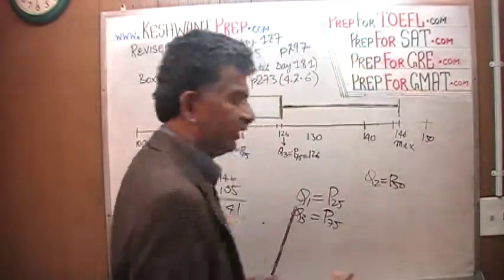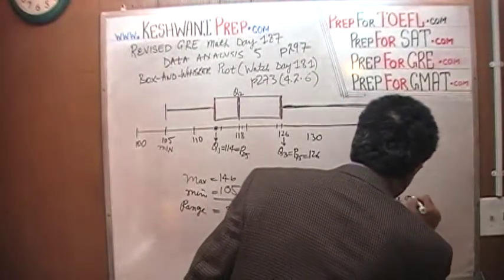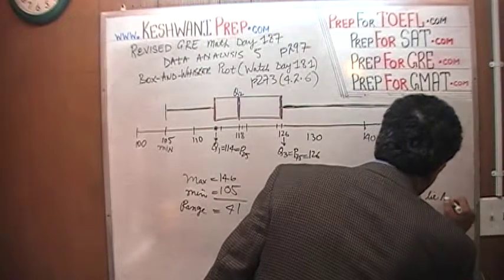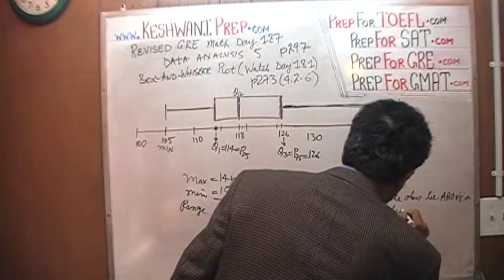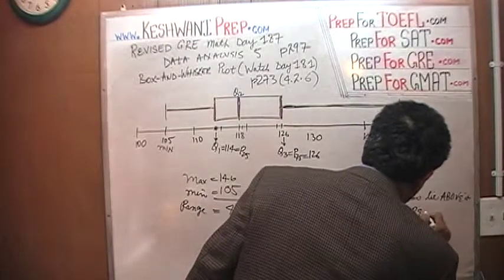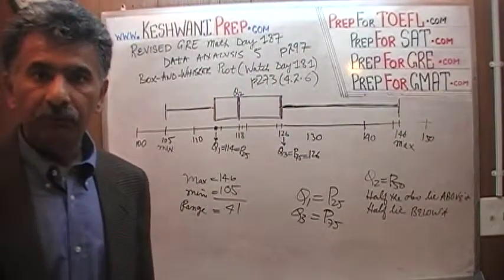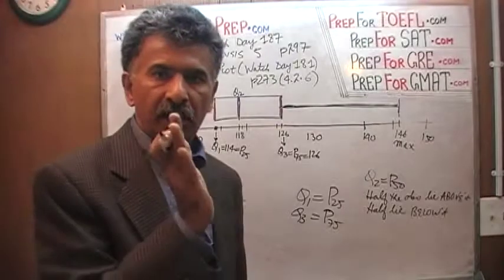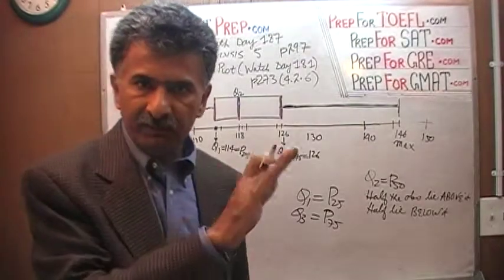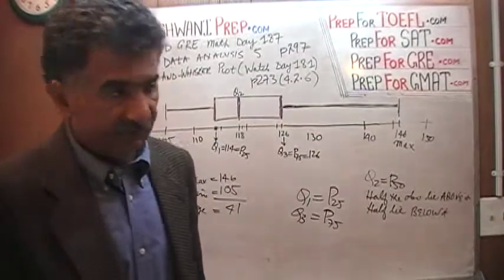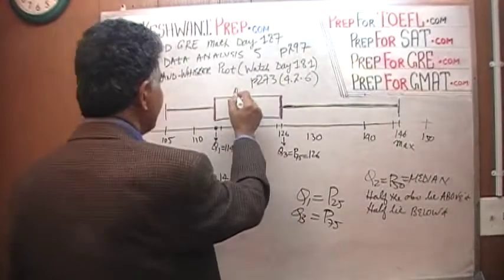Half the observations lie above Q2 and half lie below it. That is the definition of the observation below which half the observations lie and above which half lie — the middle point with half the observations on each side. That is the definition of the median, so Q2 is your median.